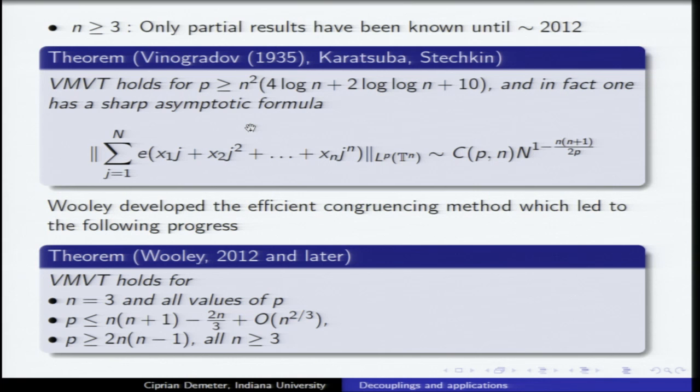Here is our theorem: we proved it in all dimensions. Our decoupling theorem has a delta-to-the-epsilon loss, which translates into an n-to-the-epsilon loss. However, by using the contribution of the major arcs and a little bit of number theory, we can actually remove that loss. So this is, in some sense, the sharp result. It's not sharp in the sense that we don't understand the exact value or even the asymptotics of the implicit constant, which causes some headaches for number theorists — understanding it would say something about the zero-free region of the Riemann zeta.